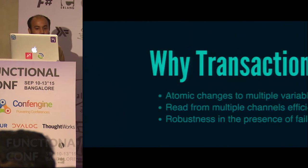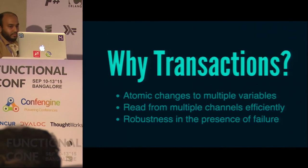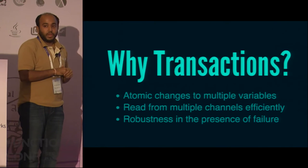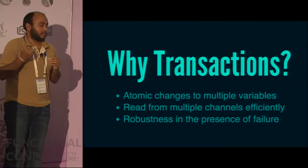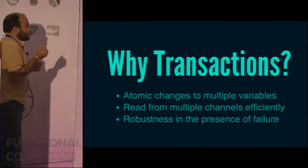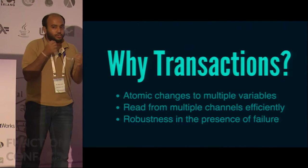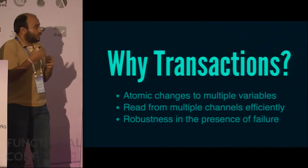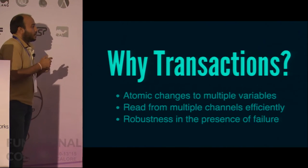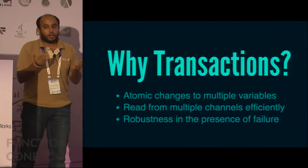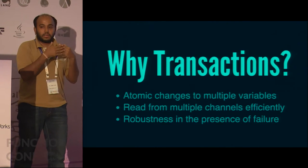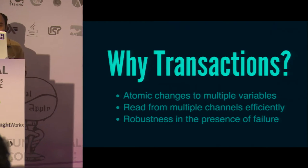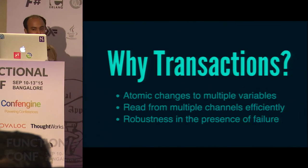Multiple transactions running on the same variables will see a snapshot of the variables at the beginning of the transaction, not the state as it changes inside — that's the isolation part. The transactions will always take your variables from a valid state to another valid state — that's consistency. You need STMs to change multiple variables atomically, to read from multiple channels efficiently without launching extra threads, and to roll back effects if something goes wrong.